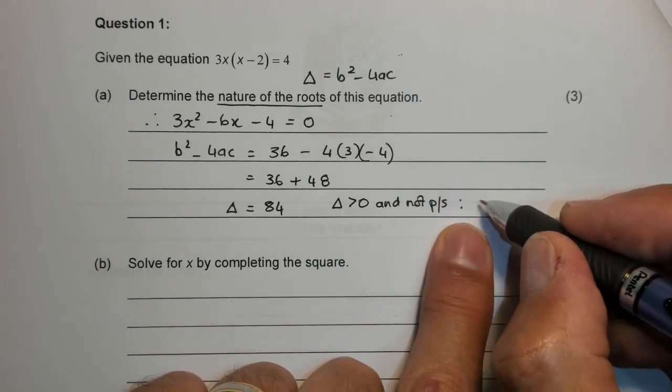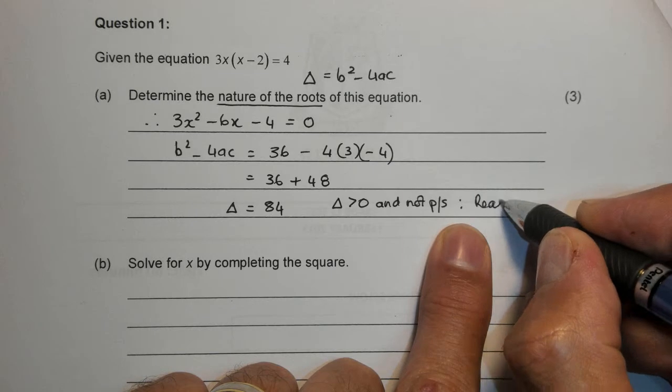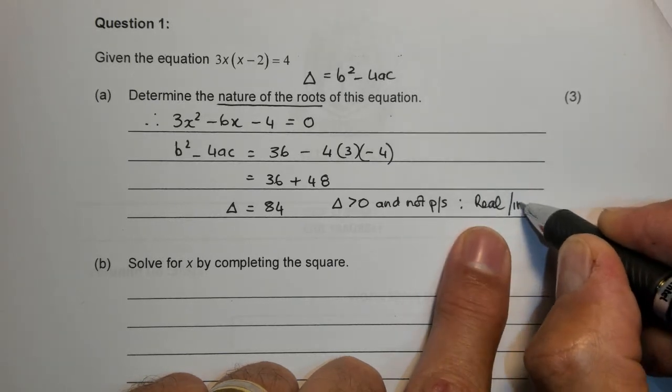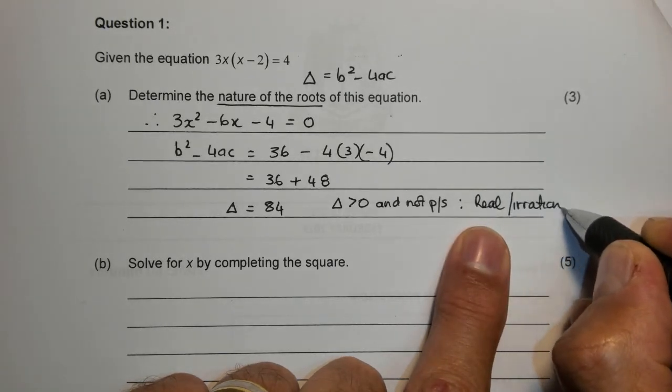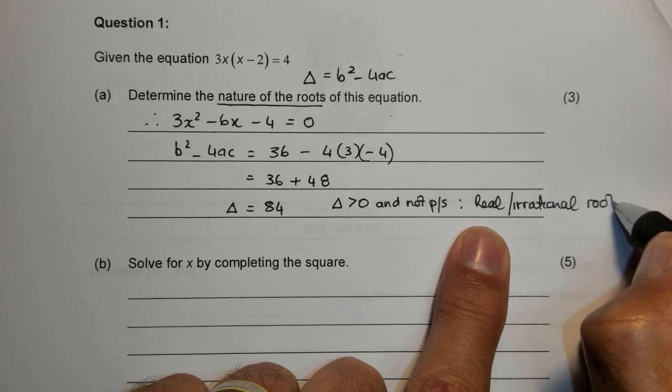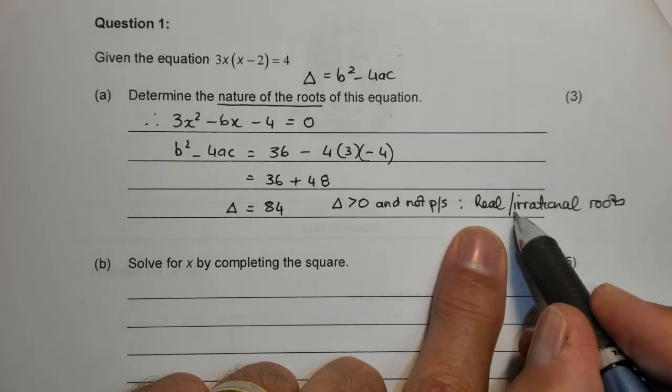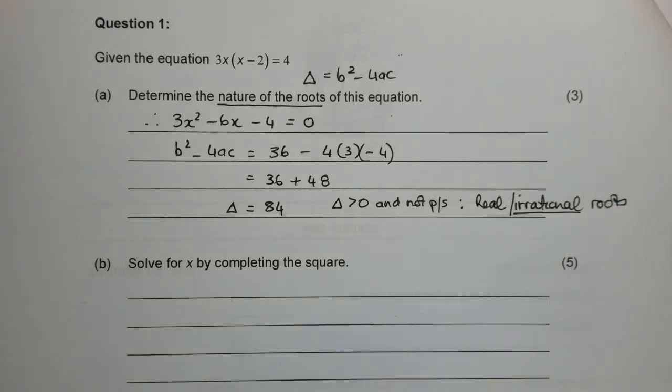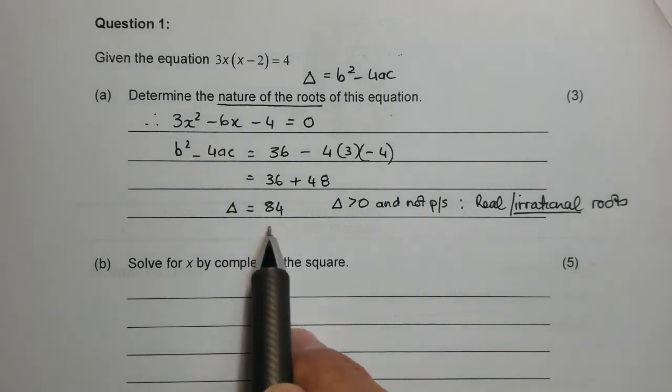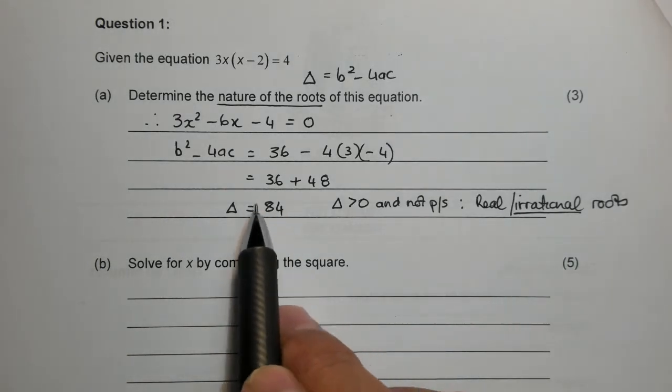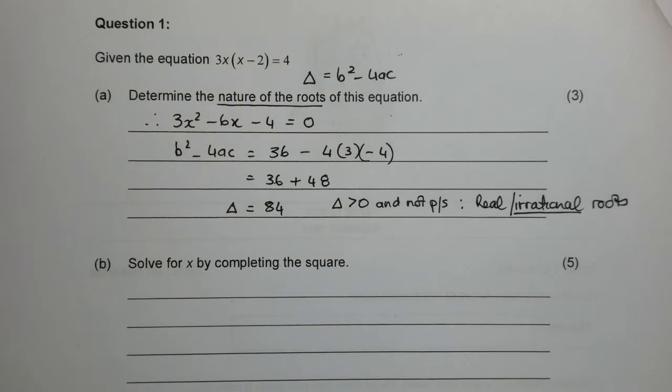We're going to have real, or you can just say irrational roots. The key thing here is that the roots are definitely irrational because we're stuck with no perfect square over here.